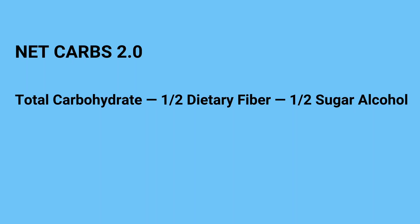It turns out, as we're getting more information about the gut bacteria and the fact that the gut bacteria digests the soluble fiber or fermentable fiber, these equations aren't totally accurate. And knowing that the majority of sugar alcohols also give us, on average, half the calories of regular sugar, a more accurate net carb equation would be: total carbohydrate minus half the dietary fiber minus half the sugar alcohols equals net carbs.